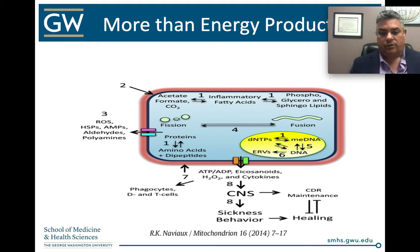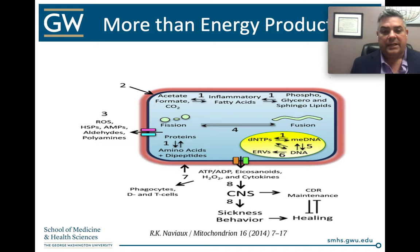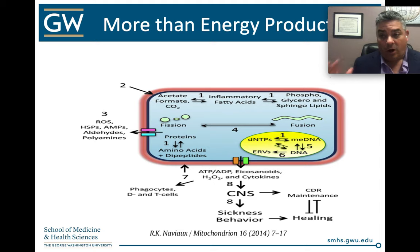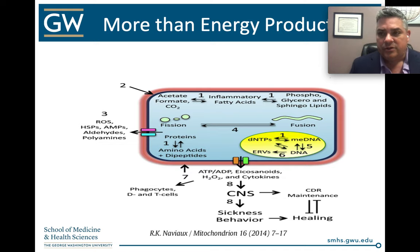One of the first things the mitochondria does is create a bloom of ATP, which acts as a local signaling compound to tell other cells that something is going on. In addition to that, we see acetate formation, production of inflammatory fatty acids, and alterations of phospholipids. The composition of fatty acids starts to change into a pro-inflammatory state, and the composition of the phospholipids change.